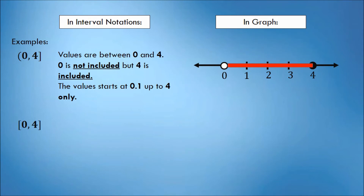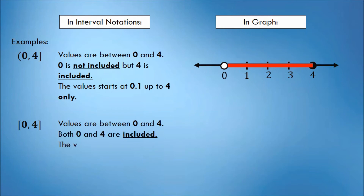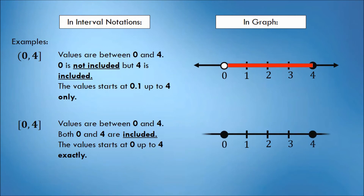Next example: we have the interval [0, 4]. This interval indicates that the values included are between 0 and 4, and both 0 and 4 are included because of the bracket symbol. Meaning, the value starts at 0 up to 4 exactly. In the graph, we will put shaded circles on 0 and 4 because those values are included. The solution set is from 0 up to 4 exactly.